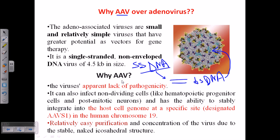When the virus needs to come out from dormancy, it requires the help of adenovirus for escape and packaging. If there is no adenovirus, its life cycle stays at the dormant stage by simply placing its double-stranded DNA onto the host chromosome. We choose AAV because of its apparent lack of pathogenicity — unlike adenovirus and lentivirus, AAV has not been proven to cause any kind of deadly disease, and the human immune system lacks antibodies for it.